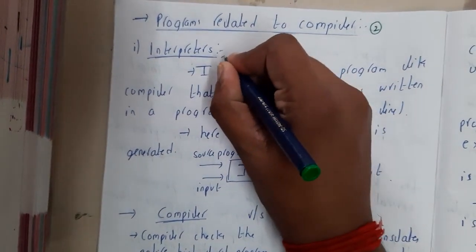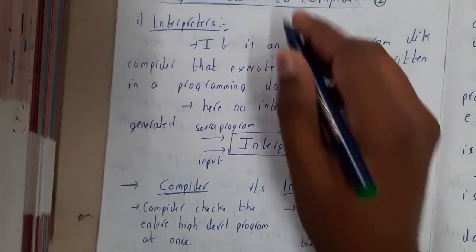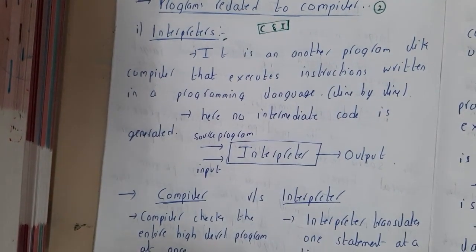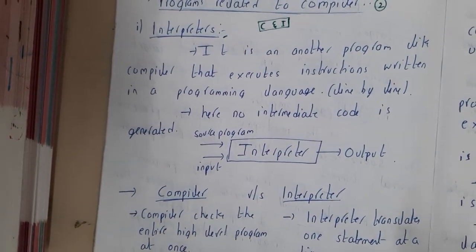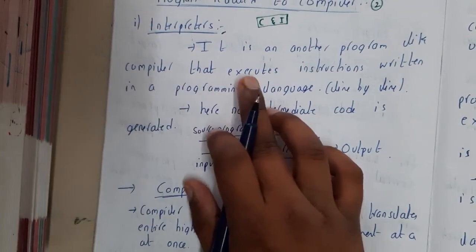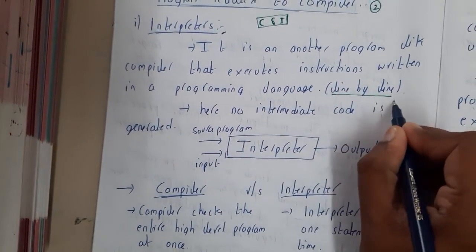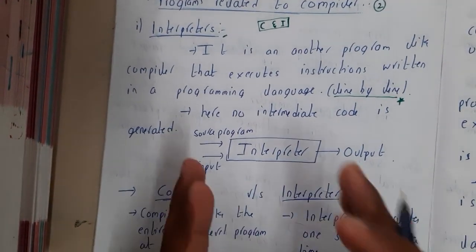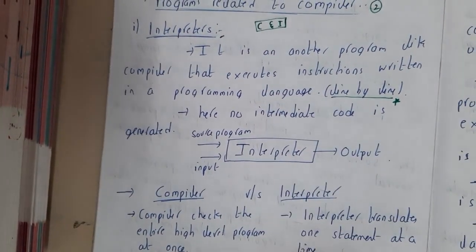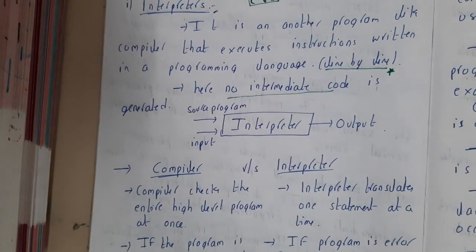First, let us start with the interpreter. The work done by the compiler and the interpreter is almost the same, but how they do it is different. An interpreter is another program, like a compiler, that executes instructions written in a program line by line. It does the same thing but line by line, and there is no intermediate code generation.